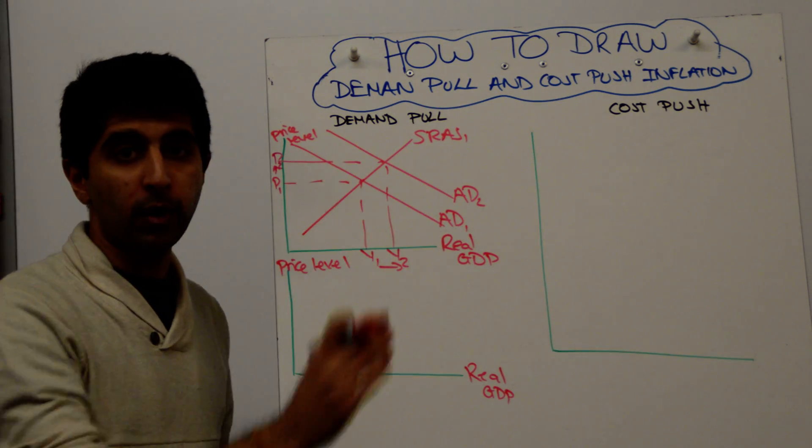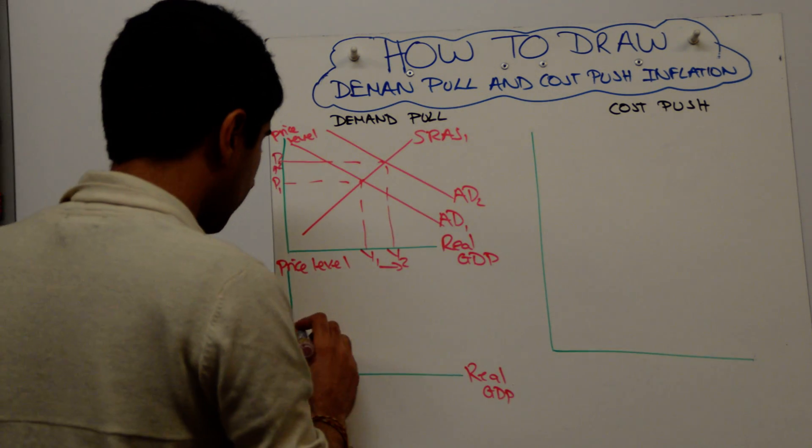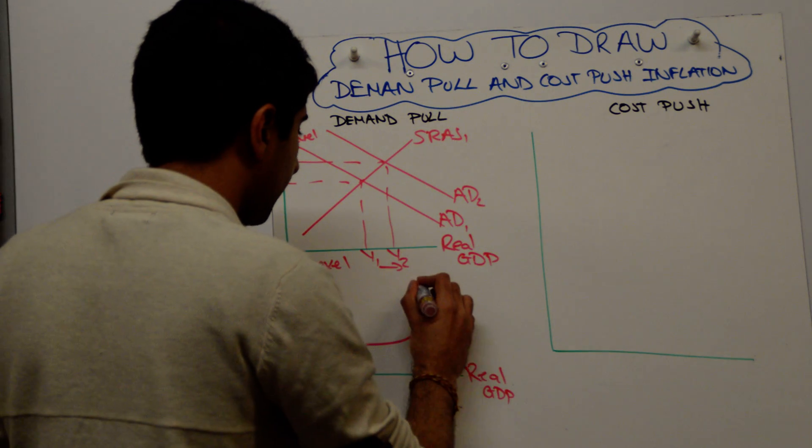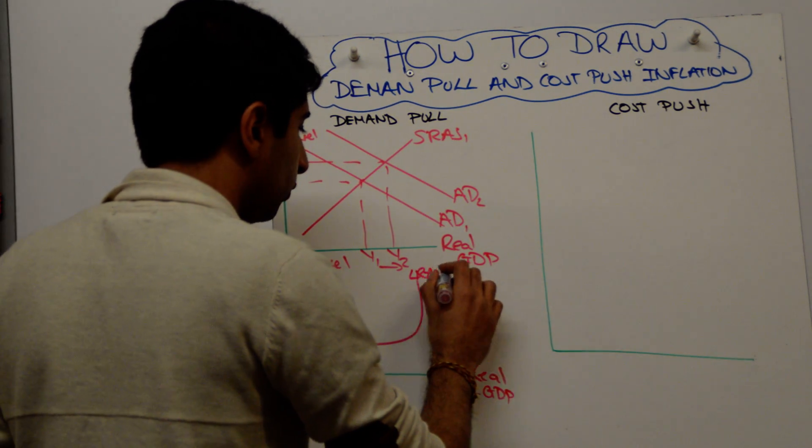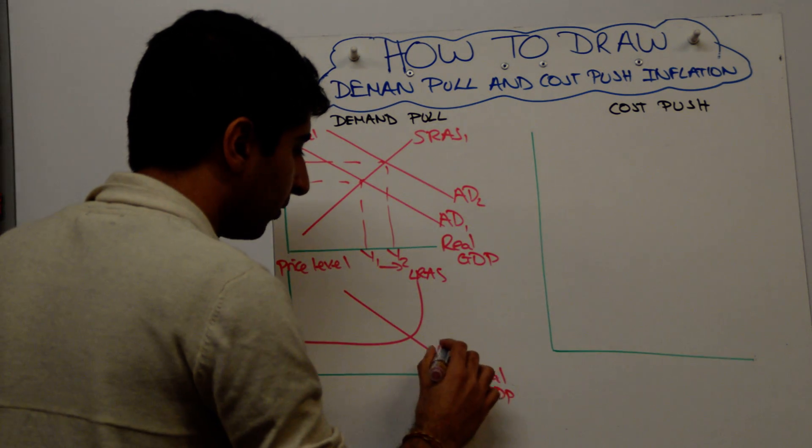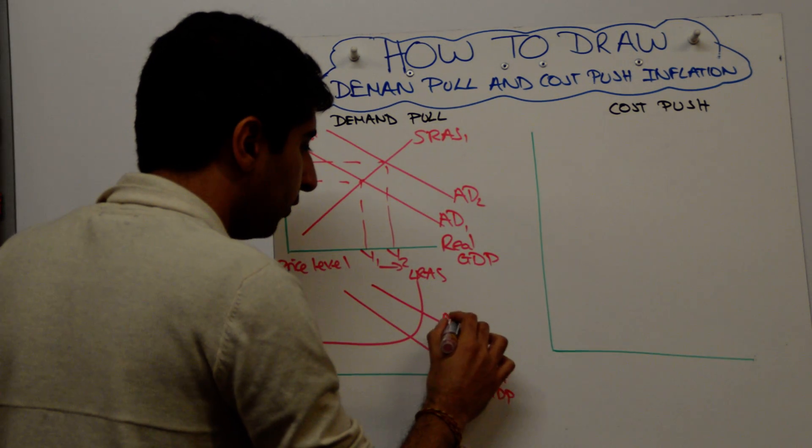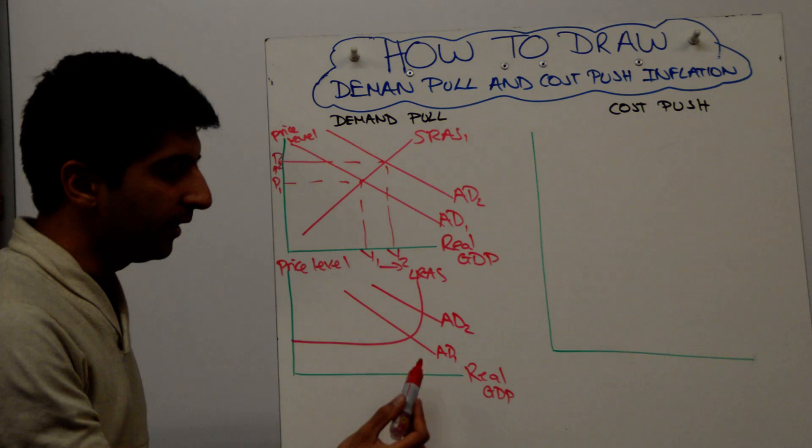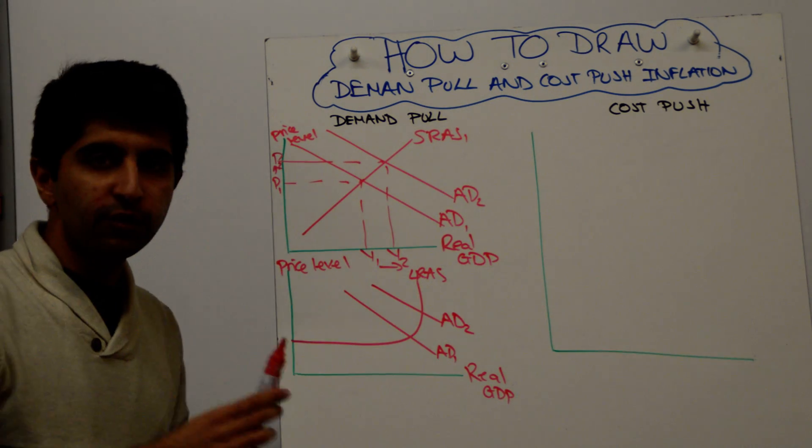So that's one way which you can show it. The other way you can show it is by using the Keynesian LRAS diagram. So do whichever one you feel comfortable with, and simply shift AD from AD1 to AD2. The key thing on this diagram is to start your AD kind of towards the curve.